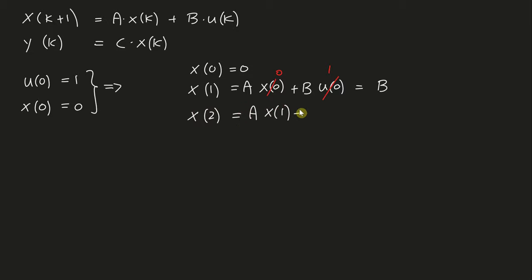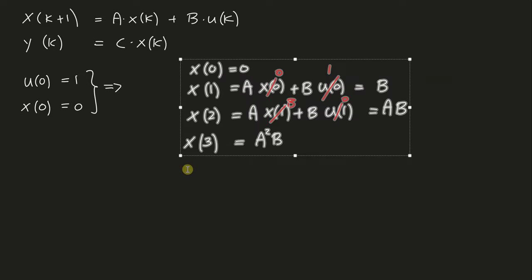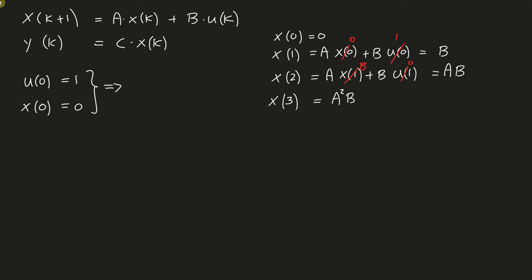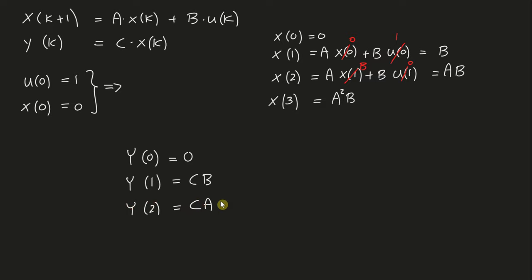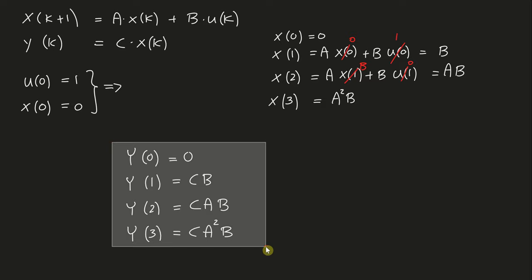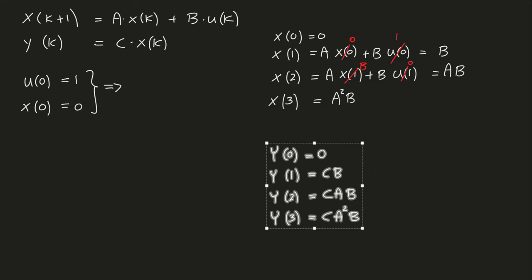For x₂, continuing the same process, I get A·B. For x₃ it's A²·B, and it just keeps going. Now I can write my output equations in terms of the A, B, C matrices: y₀ = 0; y₁ = C·B; y₂ = C·A·B; y₃ = C·A²·B — and the only thing that evolves from this point onwards is the exponent on the A matrix. These expressions continue indefinitely.